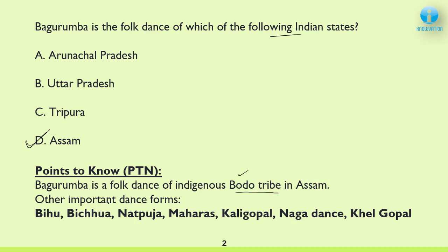Some more important dance forms of Assam are Bihu, Bichua, Nat Pooja, Maharas, Kali Gopal, Naga Dance, and Khel Gopal. You should be making your notes right now. If you haven't made notes, please start writing them down. Remember all the dance forms well, keep revising them and you will remember.